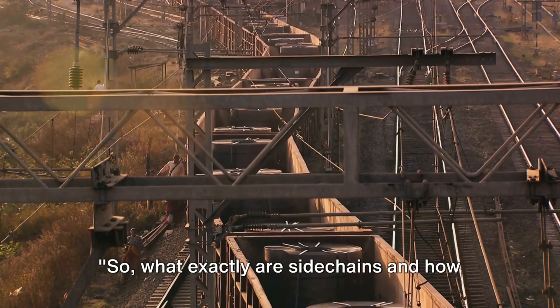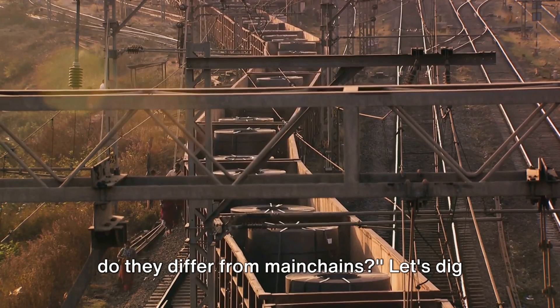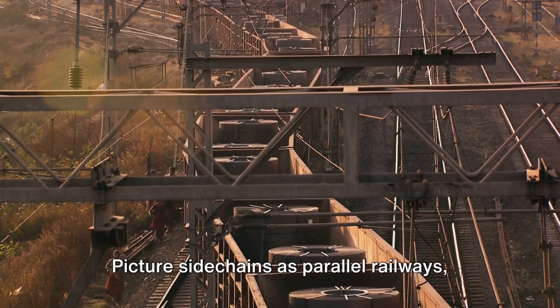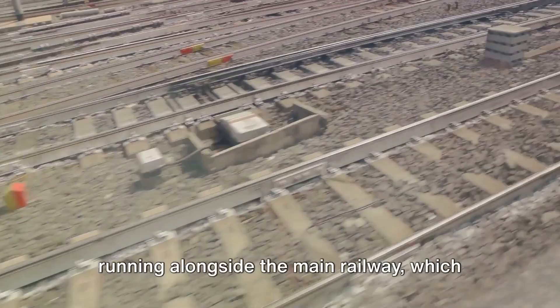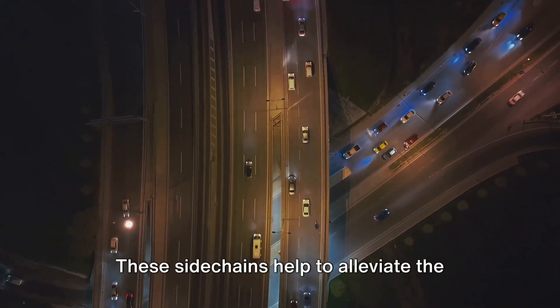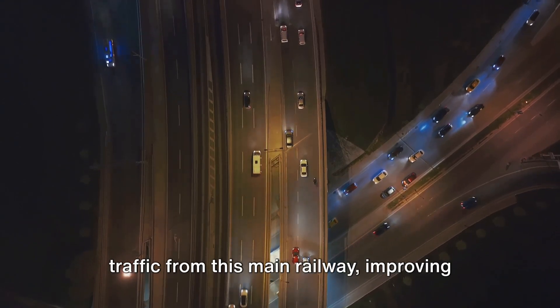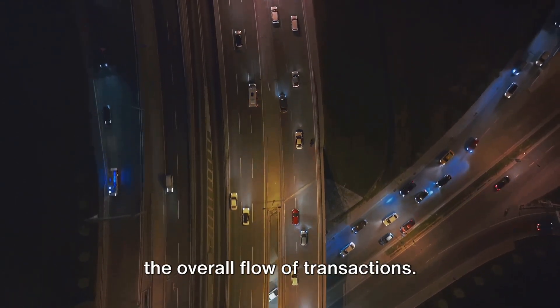So, what exactly are sidechains and how do they differ from main chains? Let's dig into this. Picture sidechains as parallel railways running alongside the main railway, which we can call the main chain. These sidechains help to alleviate the traffic from this main railway, improving the overall flow of transactions.